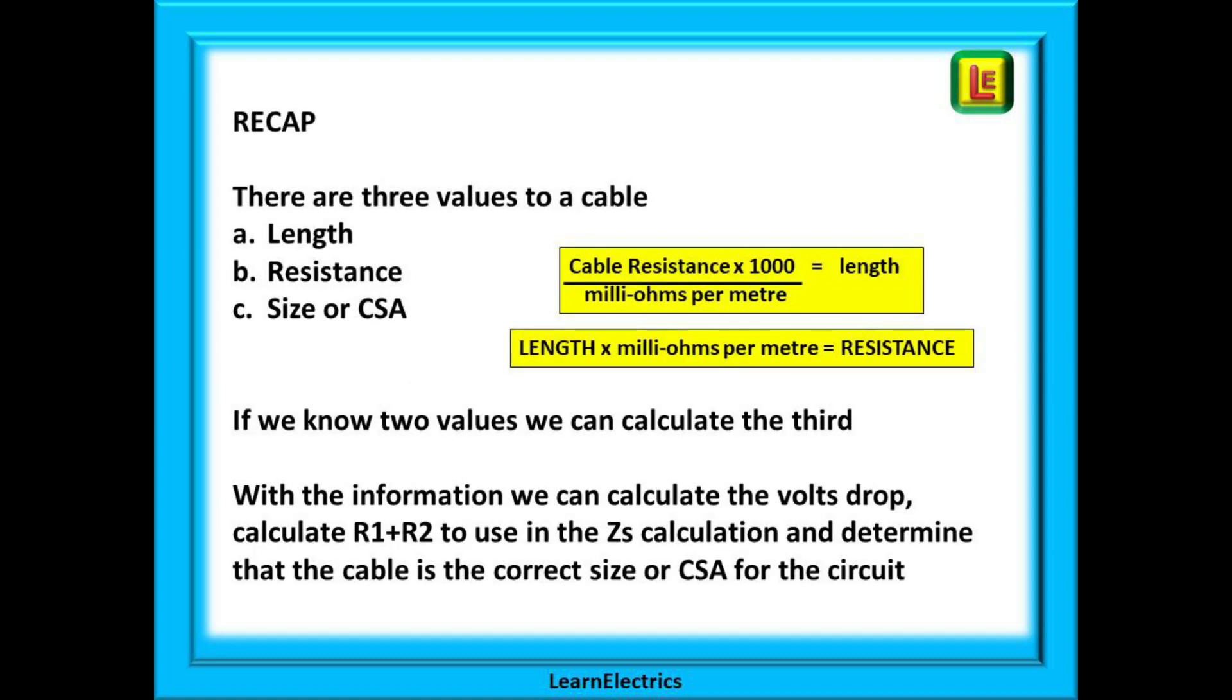A recap then on what we have talked about. There are three values of interest to us with the cable. The length of the cable, the resistance of the cable, and the size or cross sectional area of the cable. As we have seen if we know two values we can calculate the third.